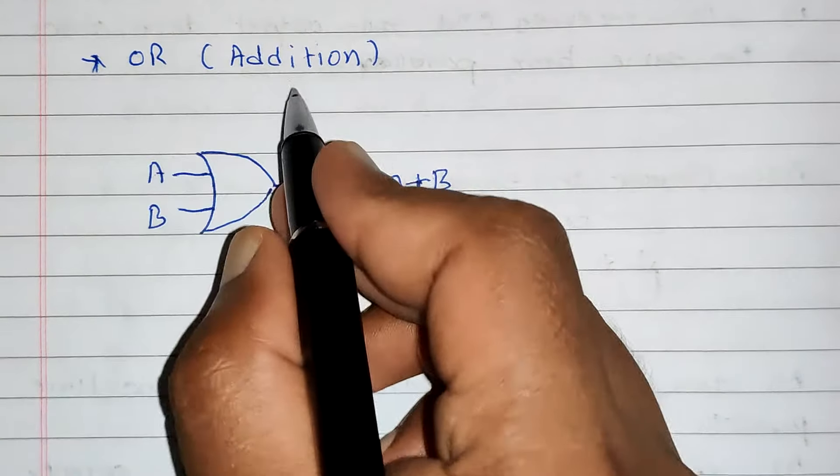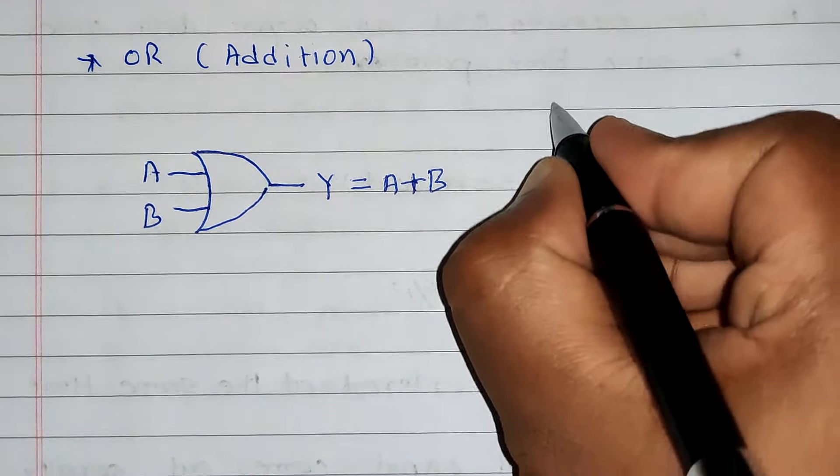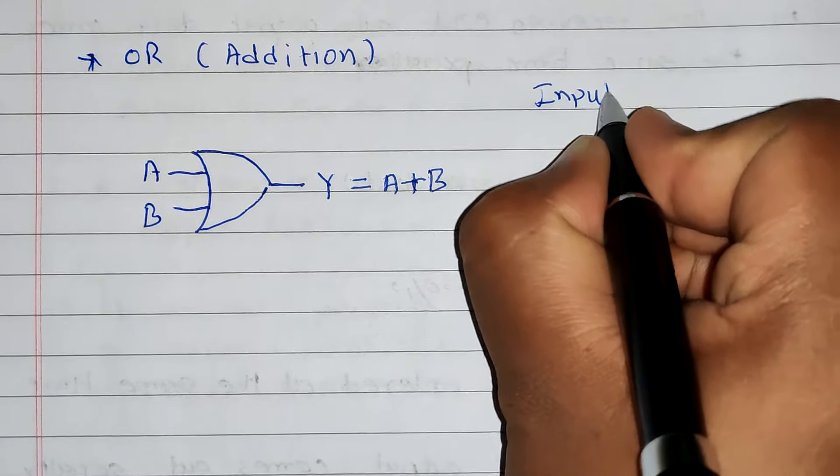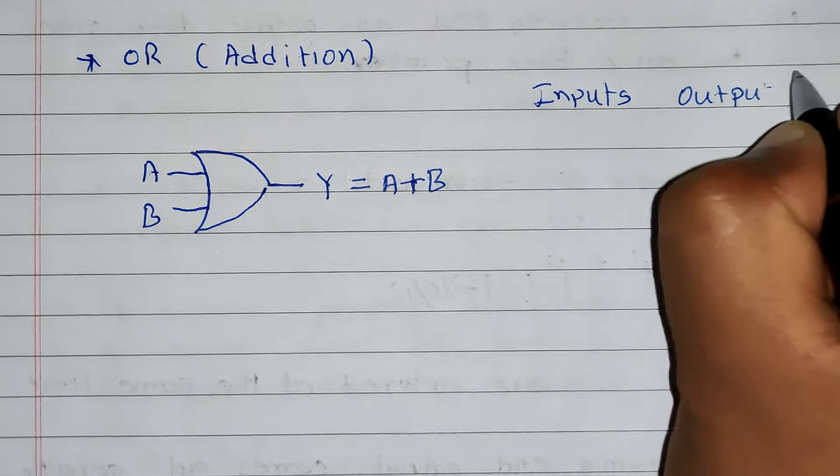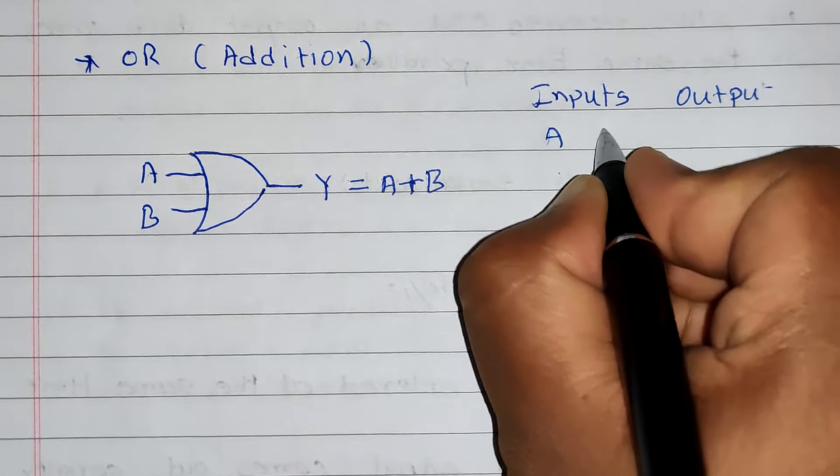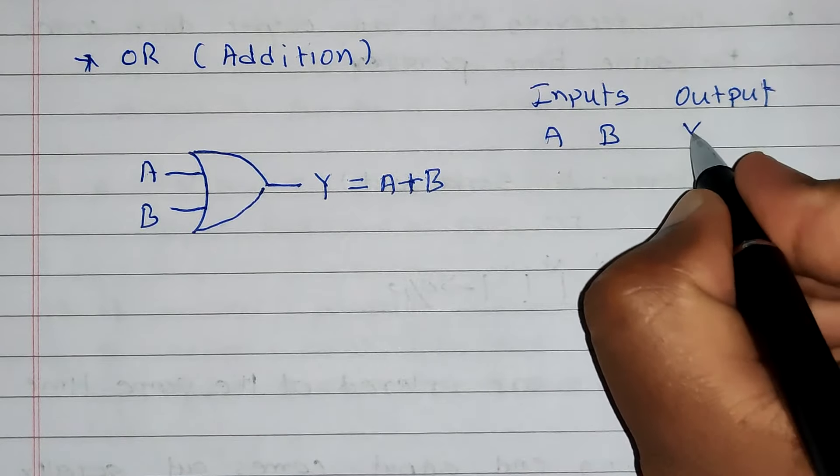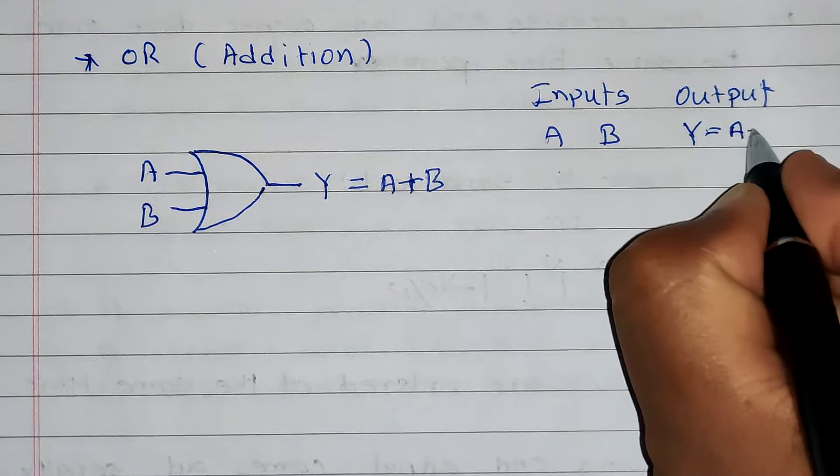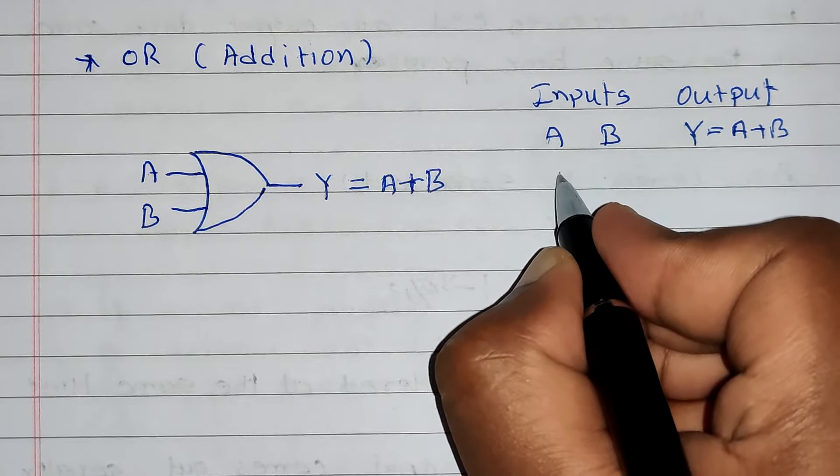That's why OR gate performs addition. Now, let's check the truth table of OR gate. It will have inputs and output. Inputs are two, A and B, and output is Y which equals A plus B. Now, let's perform addition of inputs.